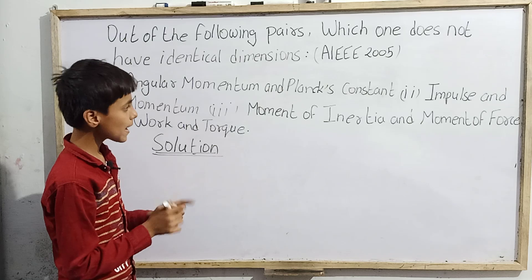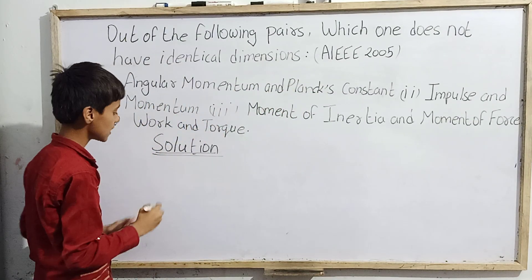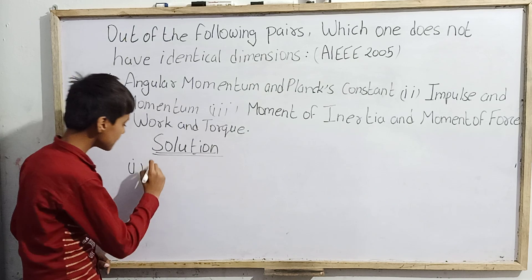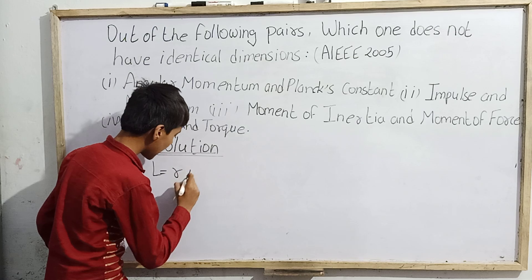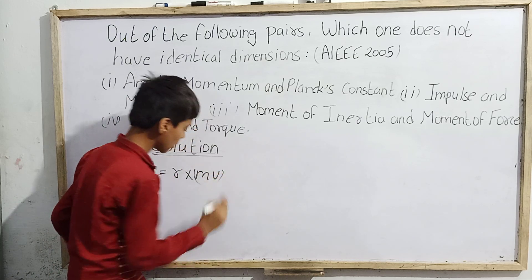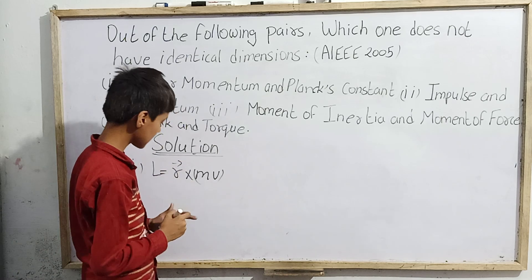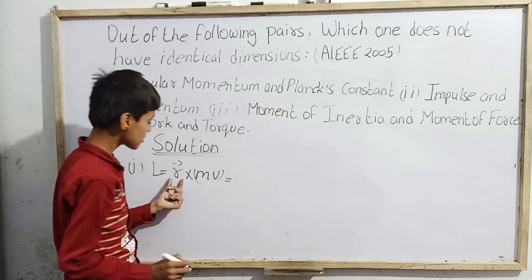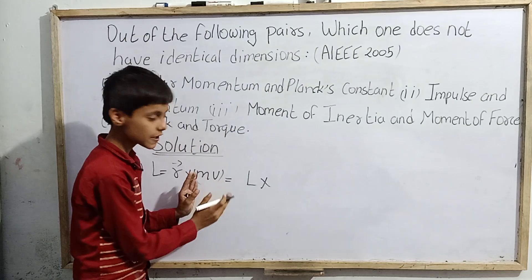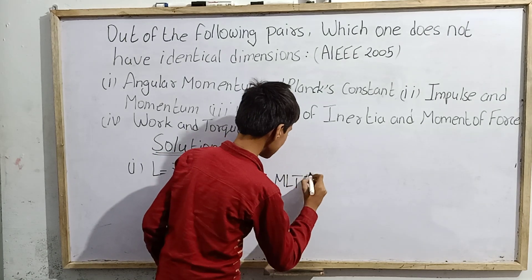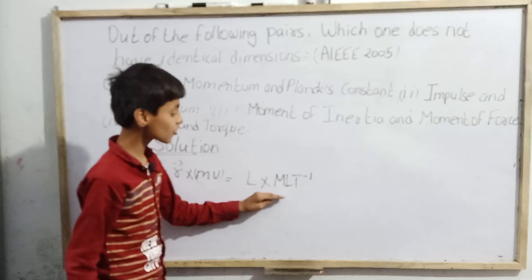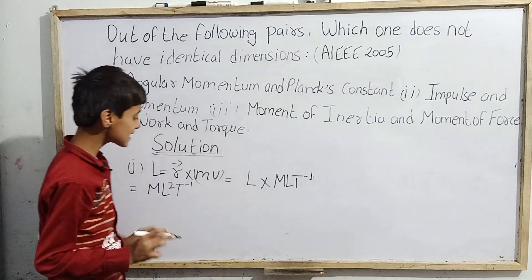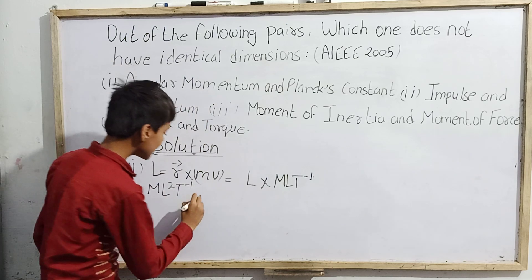Let's verify each option one by one. For option A: angular momentum formula is r × mv. Finding its dimensions: L × MLT⁻¹ = ML²T⁻¹. This is the dimensional formula for angular momentum.